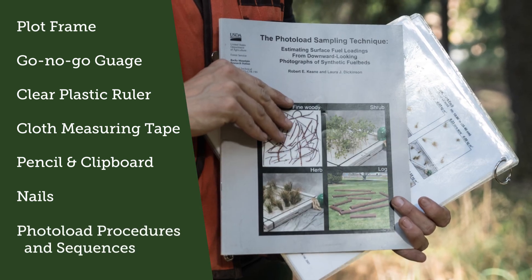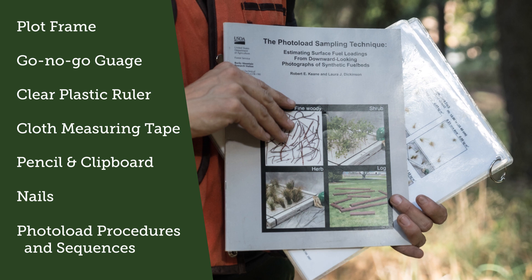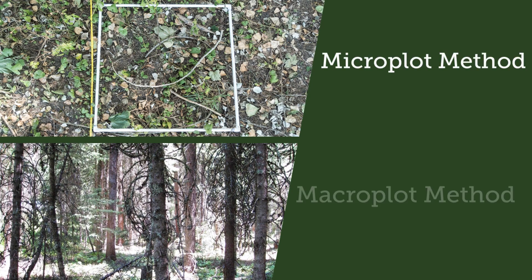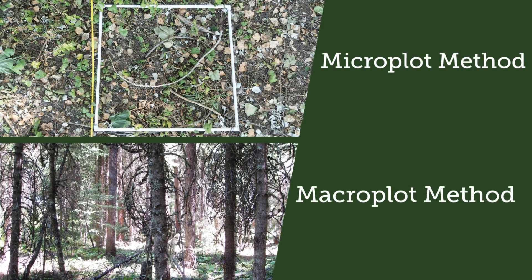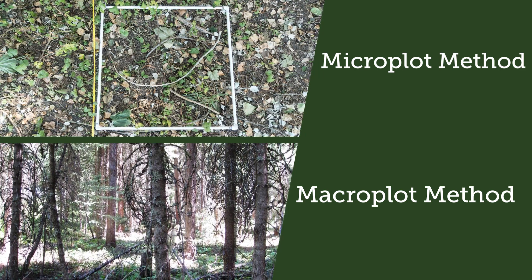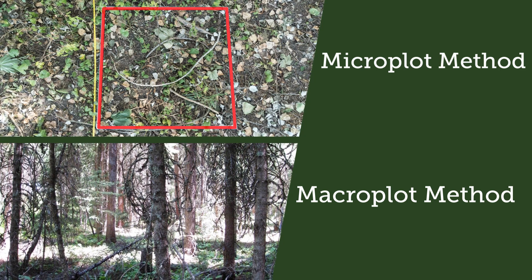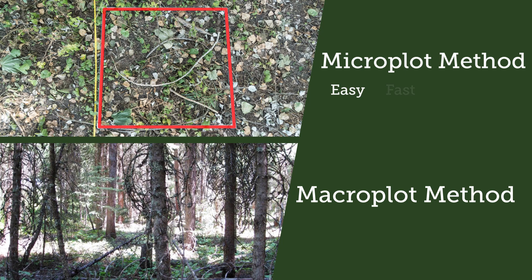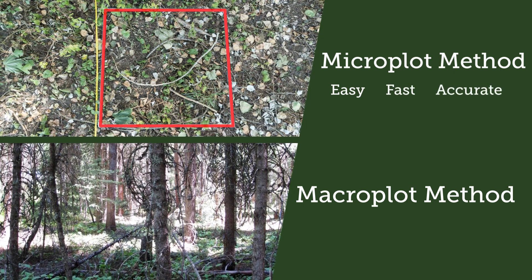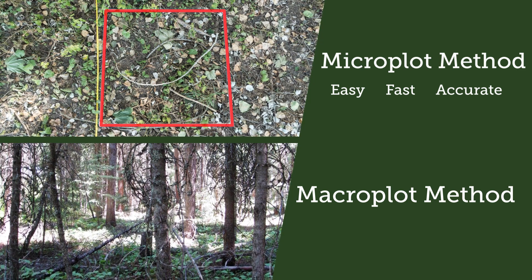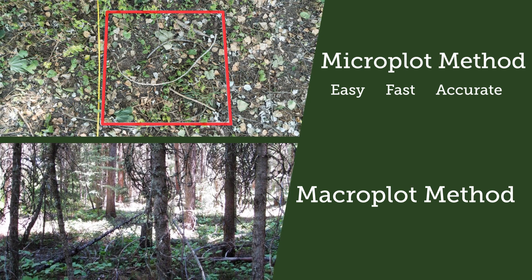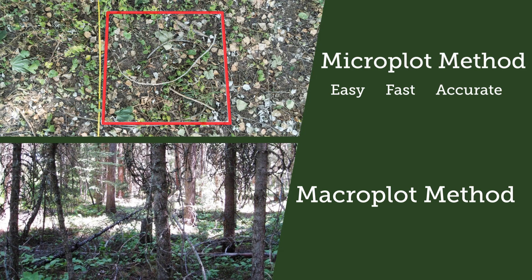We suggest that the photo load sequences be cut from the instruction document and laminated to waterproof pages. Photo load has microplot and macroplot methods, both described in detail in the photo load manual. This video covers photo load sampling at the microplot level, where the sample frame is a one-meter by one-meter square microplot. The microplot approach is easy, fast, and provides an excellent estimate of true fuel variation. Once practiced, you'll be ready for the macroplot method, which performs the same estimates just outside of the frame with a more general loading estimate for the entire sampling area.